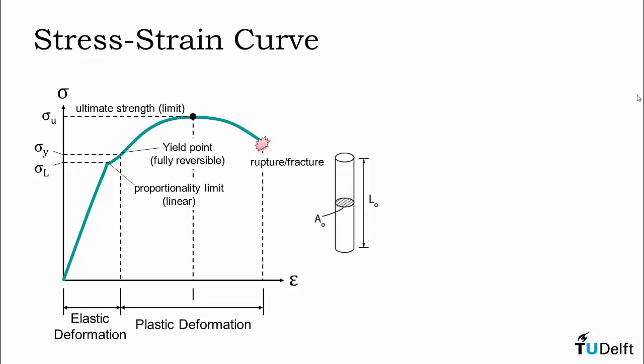The plastic region can be divided even further into a portion of strain hardening and a portion of necking, where necking is a localization of the cross-sectional deformation.